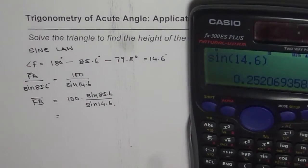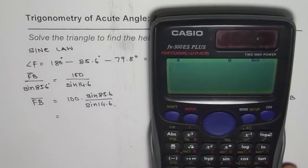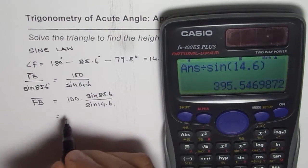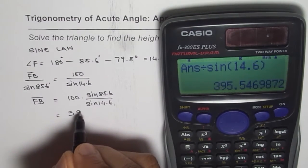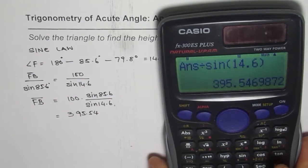That is a very low value. Let me do it again. I might have done some calculation error. So we have 100 times sine of 85.6 divided by sine of 14.6. That gives us 395.54.